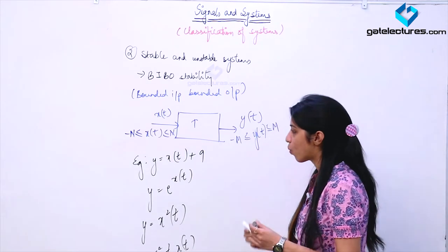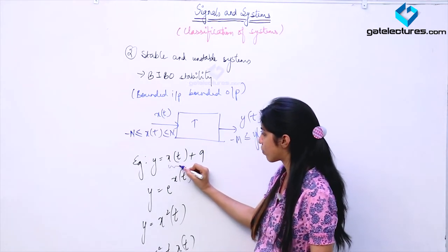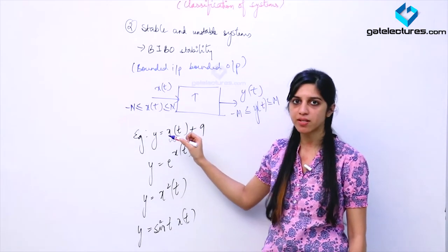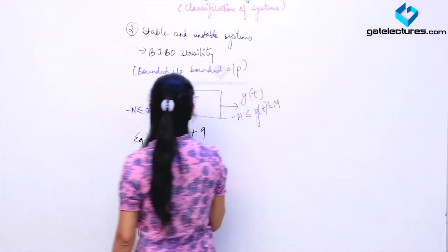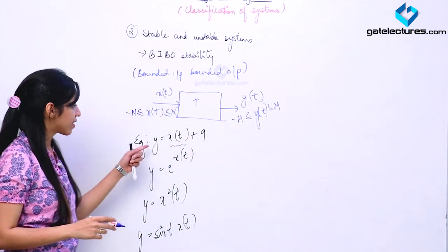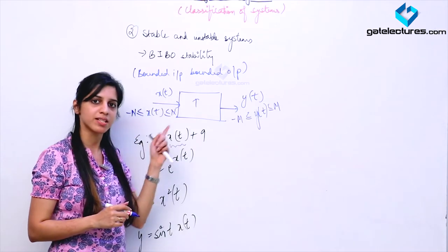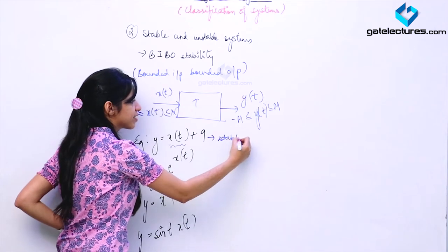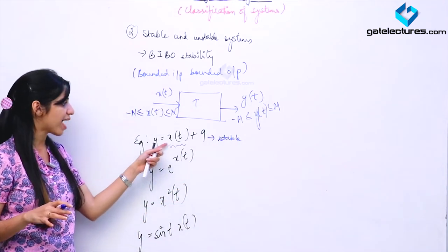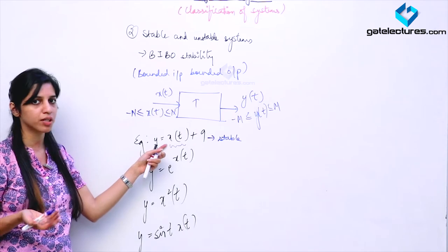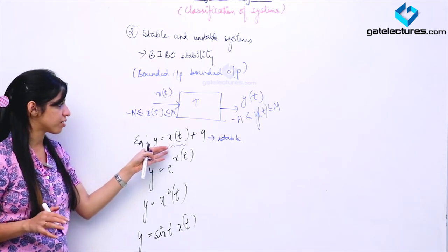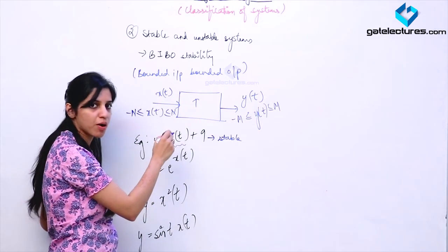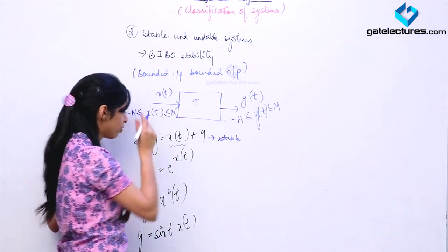Look at the first example. If this input is bounded, if it lies between some fixed values, is Y going to lie between some fixed values? Yes, because if X(T) lies between minus N and N, then Y is also going to lie between minus N plus N and N plus N. So this is going to be a stable system. If the input is bounded, we guarantee the output is bounded. We are checking that if the input is bounded, whether the output is bounded or not.